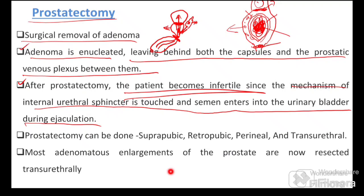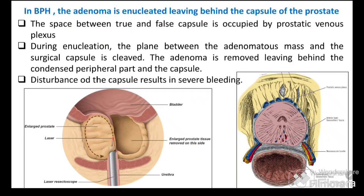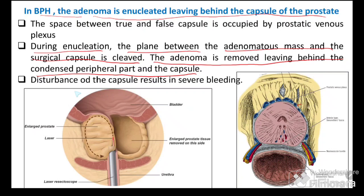There are different types of prostatectomy: suprapubic, retropubic, perineal, and transurethral. Nowadays most adenomatous enlargements are managed by transurethral resection. In BPH, the adenoma is enucleated leaving behind the prostatic capsule because the prostatic venous plexus occupies the space between the true and false capsule — disturbing the capsule leads to severe bleeding.